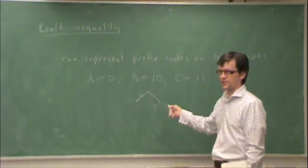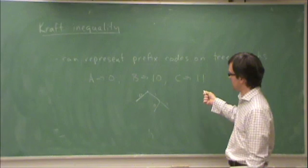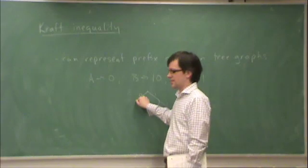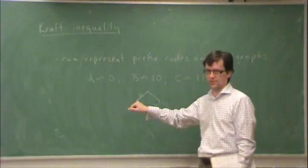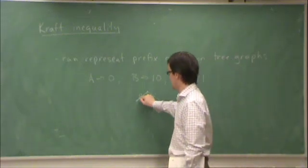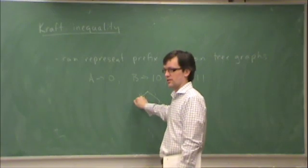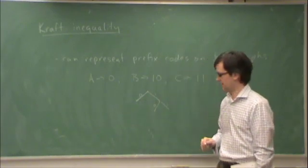So it's similarly true of any other prefix code. Basically what the leaves will represent, the paths to the leaves will represent the code words. And any time I have a complete code word, the tree must terminate. There's no code word that's the descendant of any other code word.